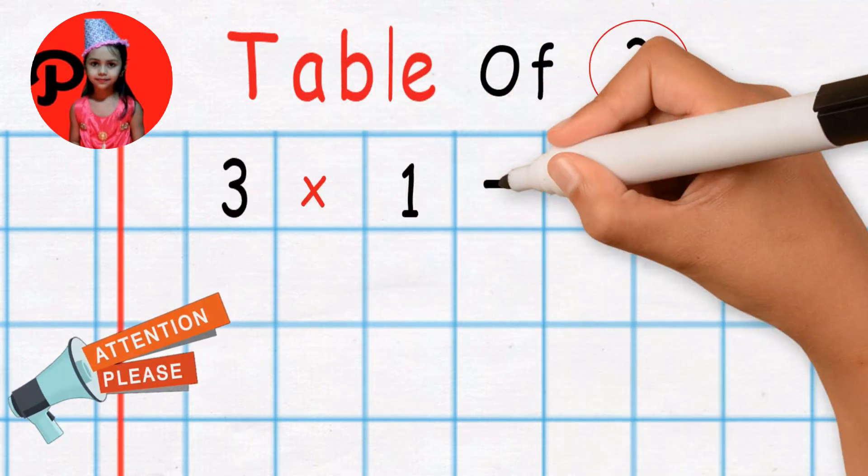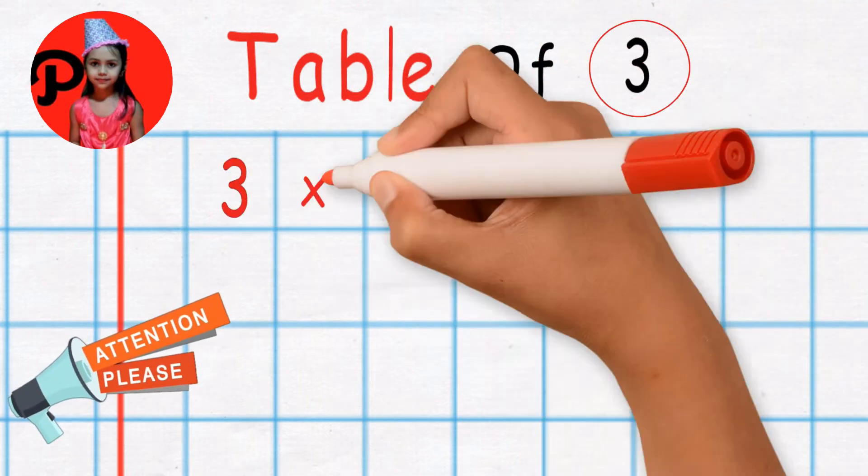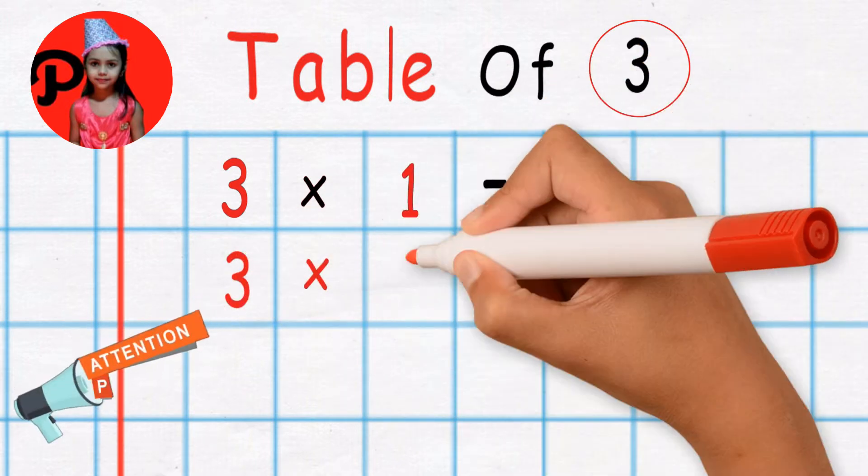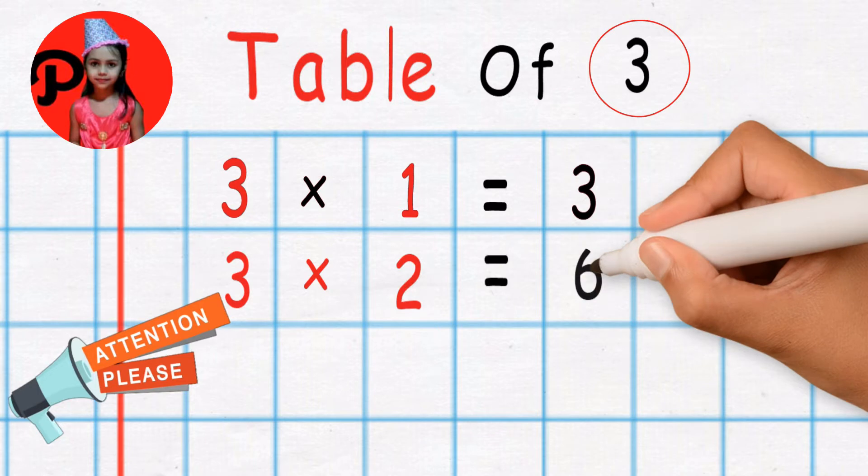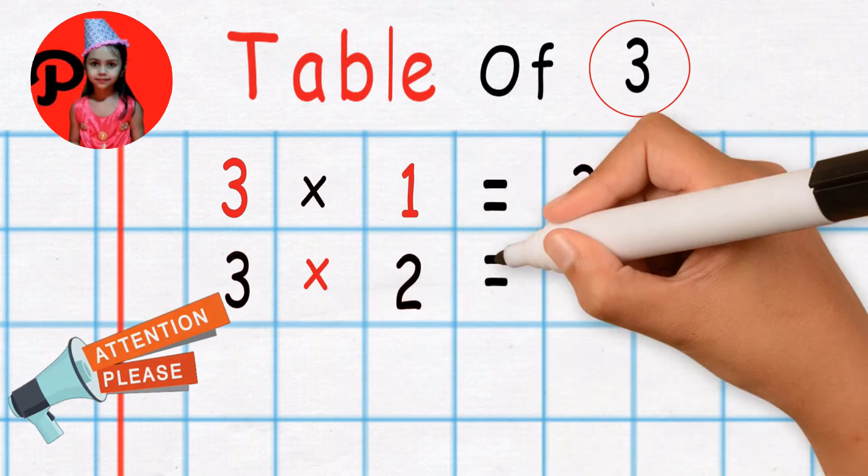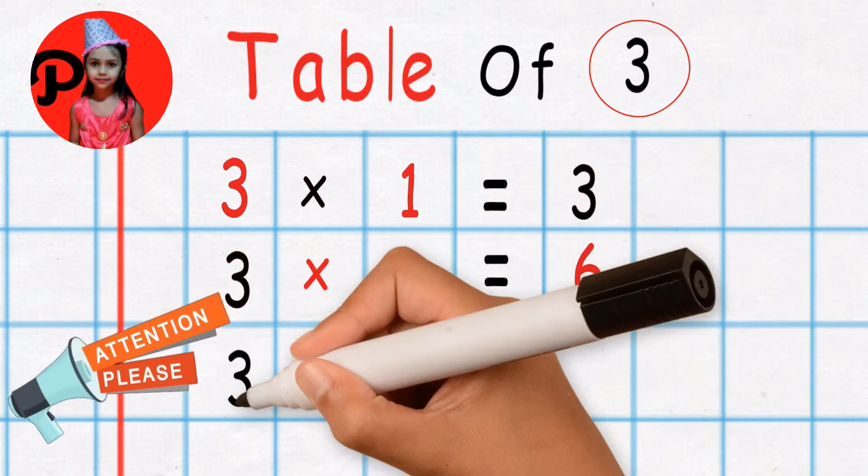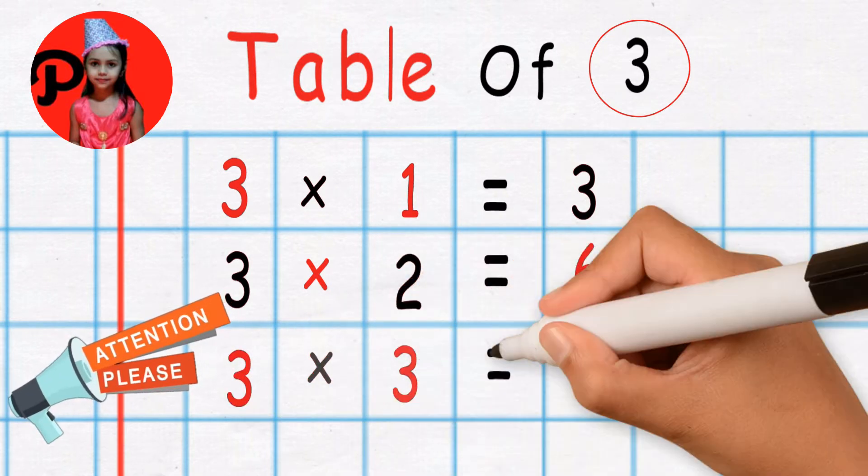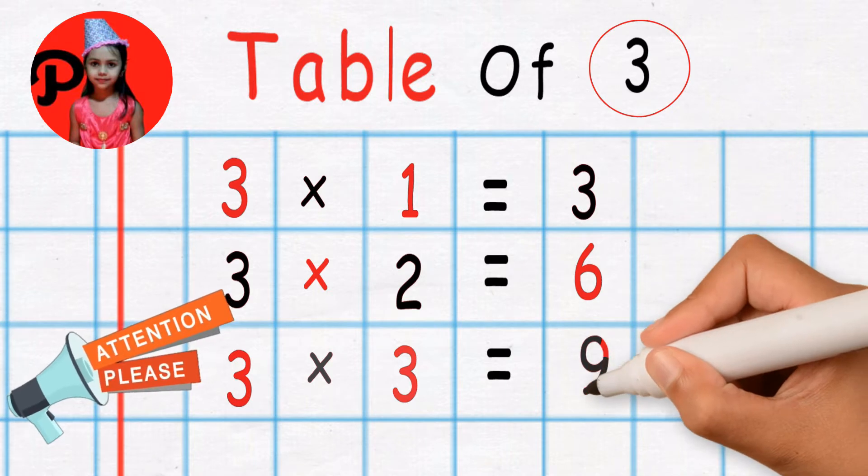3 1 is 3. 3 1 is 3. 3 2's are 6. 3 3's are 9. 3 3's are 9.